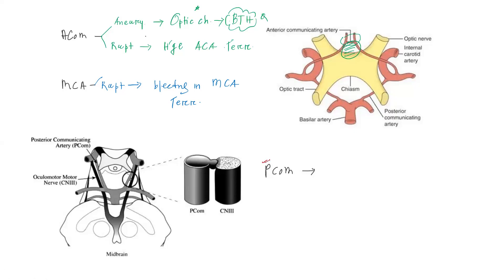If there is a PComA aneurysm — that is a posterior communicating artery aneurysm — as you can see, the posterior communicating artery is closely related to cranial nerve three, the oculomotor nerve. So if there is an aneurysm in the PComA artery, it can easily compress cranial nerve three. If there is compression of cranial nerve three, it can cause dilatation of the pupil.